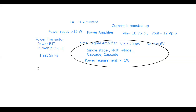You must have seen a heat sink inside a DC power supply in your lab — the black arrangement at the back. Power transistors dissipate very high current and get heated up, so to dissipate the heat and reduce the junction temperature, heat sinks are required. The heat sink provides additional surface area for heat to move out into the environment.